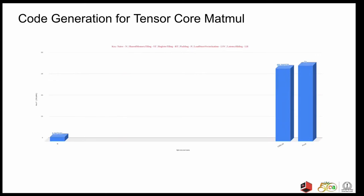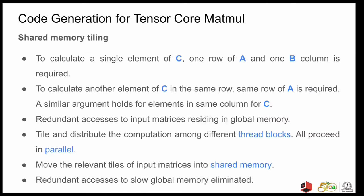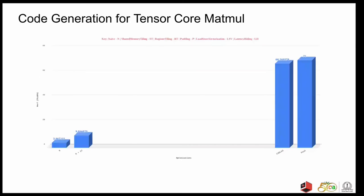So, tiling is an important optimization in GPU codes which exhibit data reuse and MatMul happens to be one of them. So, we can tile the MatMul code once and store the tiles in shared memory to prevent redundant accesses to the global memory, which are actually very costly. Each of the output tiles can then be processed in parallel by different thread blocks. During this optimization, we go up to 9.8 teraflops.